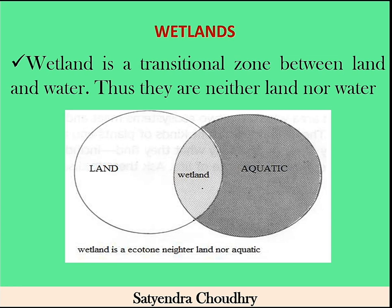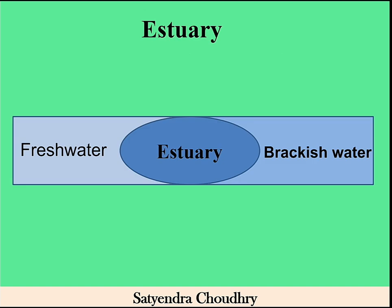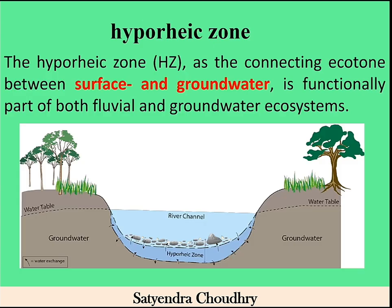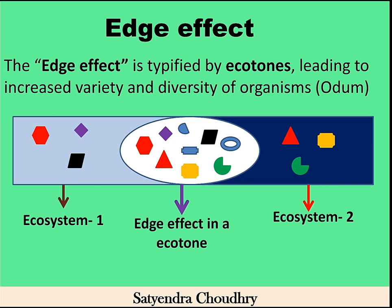Wetland is a transition zone between land and water, and this area is in the list of the most productive areas on earth. Estuaries is a transition zone between freshwater and brackish water, and this area is also a most productive area on earth. The hyporheic zone is a transition zone between surface water and groundwater.